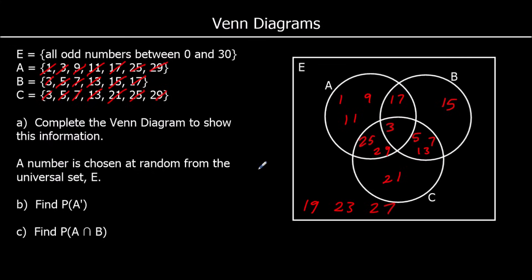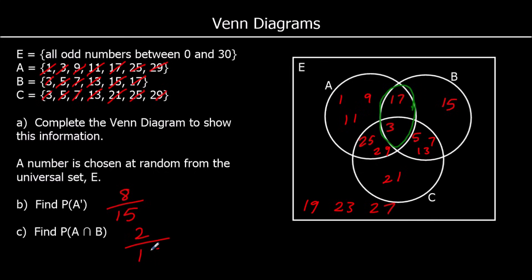A number is chosen at random. Find the probability that it's in A′ — that means not A. How many numbers are not in the A circle? There are 8 out of 15 in total, since there are 7 inside the A circle, meaning 8 are outside. Find the probability of the intersection of A and B — where the A and B circles intersect. There are two numbers in there, so the probability is 2 out of 15.